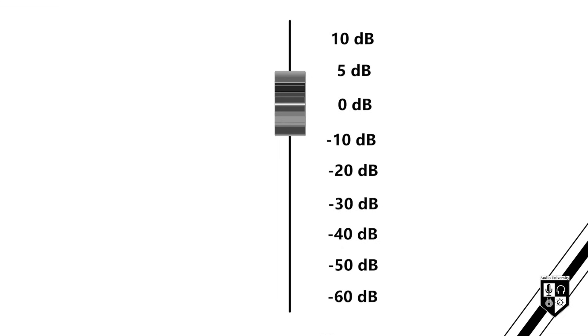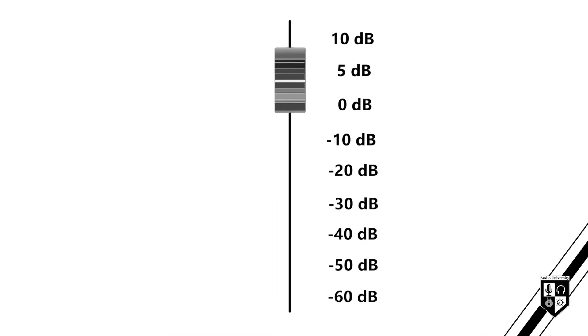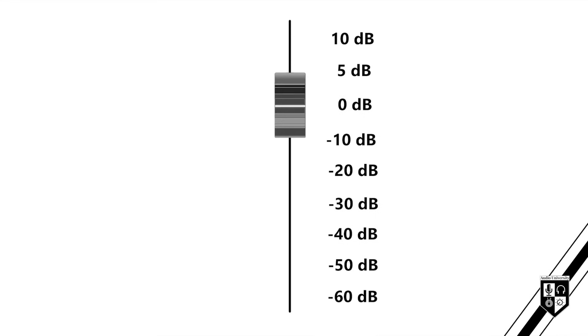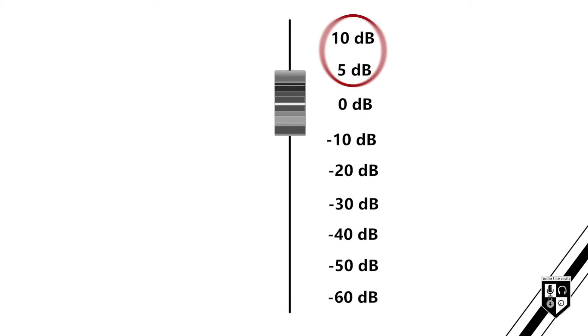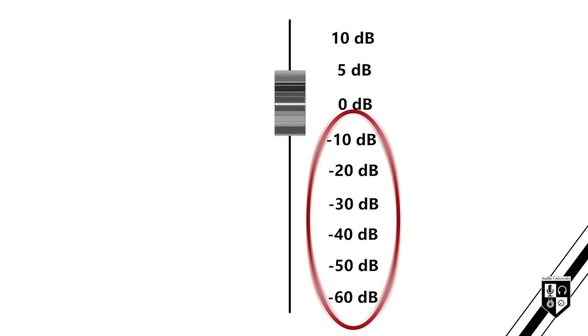In the case of a fader on a mixing console, unity gain or 0 dB is the reference point. Pushing the fader above 0 dB adds gain to the signal. Pulling the fader below 0 dB attenuates or reduces the signal. Decibel values above unity are positive, while decibel values below unity are negative.